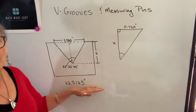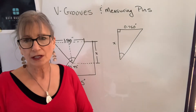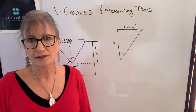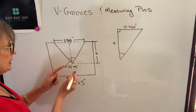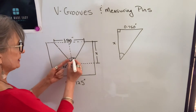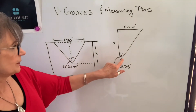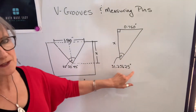Never round this off — you want to keep it on your calculator, however many decimal places it goes. Now I've bisected that angle, so this angle is 31.25625 degrees.